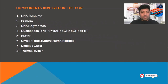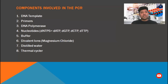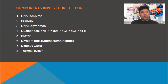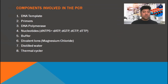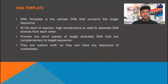There are seven different components or parts involved in the PCR machine. The first one is the DNA template, then primers, then DNA polymerase. Nucleotides — there are four major kinds: adenine, guanine, cytosine, and thymine — these are used in PCR. Then buffer solution, divalent ions, distilled water, and the thermal cycler machine.